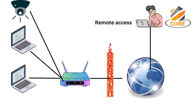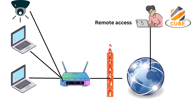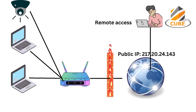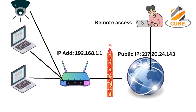When a device outside of the private network attempts to access a service on the private network, the router configured for port forwarding will forward the request to the appropriate device on the private network. The router will also keep track of the connection so that any response is sent back to the requesting device, allowing external devices to access services on the private network without needing to be part of it.